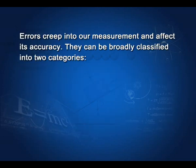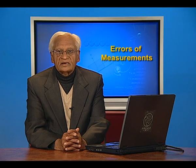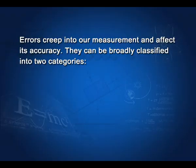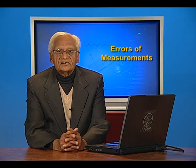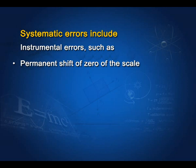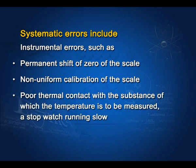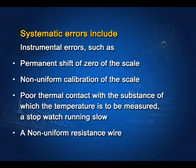Errors creep into our measurements and affect their accuracy. Errors can be broadly classified into two categories: systematic errors and random errors. Systematic errors include errors in instrumentation such as a permanent shift of zero of the scale, non-uniform calibration of the scale, poor thermal contact with the substance whose temperature is to be measured, a stopwatch which is running slow, and a non-uniform resistance wire.